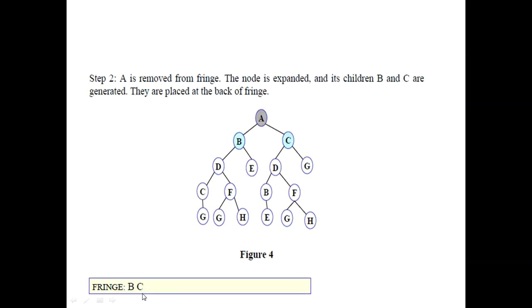Then in the second step, we will remove A. We will pick A from the fringe and see what are its successors. As you can see in this diagram, A is having B and C as its successors, so they will be added in the fringe and we will remove the root node from there. After that, we will pick B. B will be checked for its successors, which are D and E.